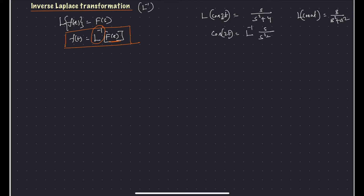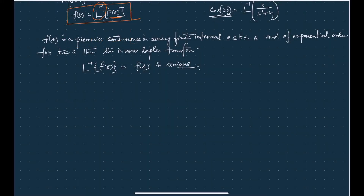So the inverse Laplace transformation of S divided by S squared plus 4 is equal to cos(2t). One important thing to remember: if the Laplace transformation of f₁(t) equals the Laplace transformation of f₂(t), then we can say that f₁(t) is equal to f₂(t).